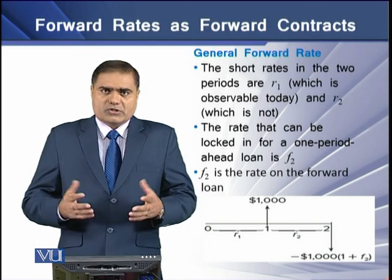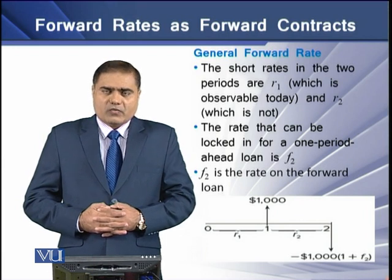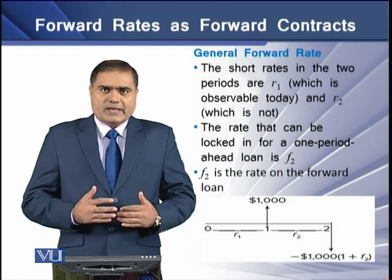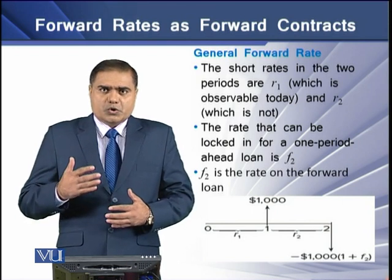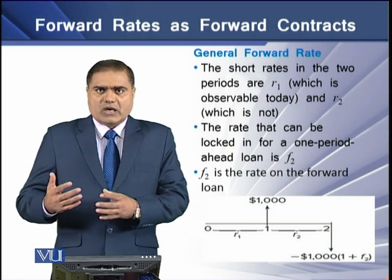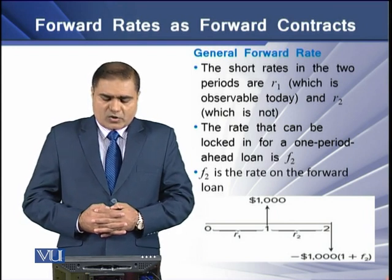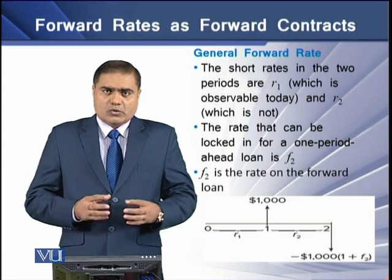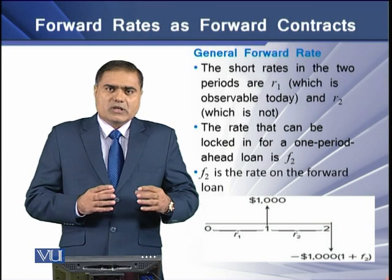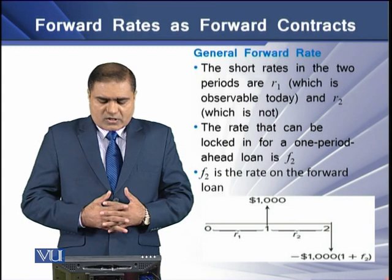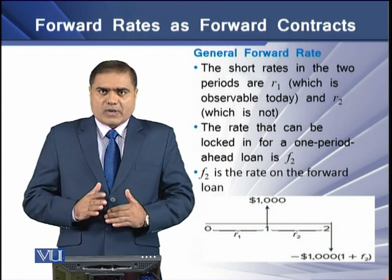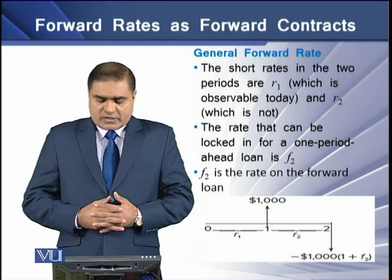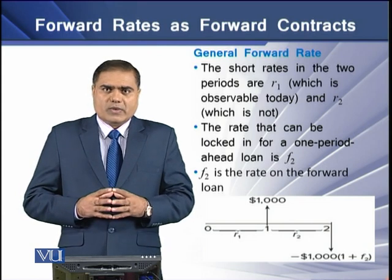With reference to the general forward rate, the short rates in the two periods are r₁, observed today, and r₂, which is not observed today. We have r₁ today but do not know the rate of interest at year two, which is r₂. The rate that can be locked in for a one-period-ahead loan is f₂, starting at the end of year one. f₂ is the rate on the forward loan. We use r₁ to price the one-year cash flows and f₂ as the forward rate of interest to price the forward loan.